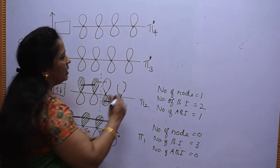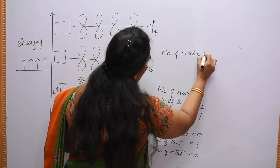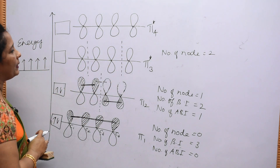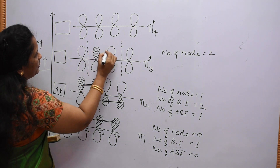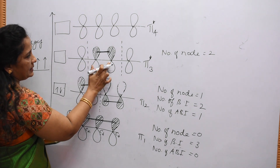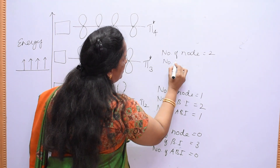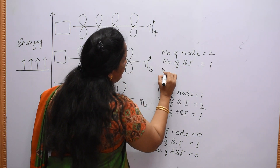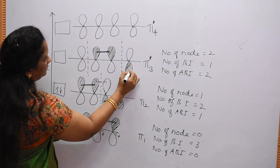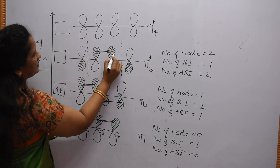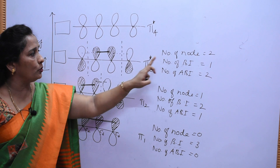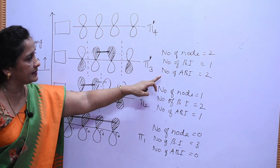Coming to the pi star 3 molecular orbital, the number of nodes is equal to 2. With two nodes, the bonding interaction can happen only between C2 and C3, so the number of bonding interactions is equal to 1. The number of anti-bonding interactions is equal to 2. So in pi star 3: 2 nodes, 1 bonding interaction, and 2 anti-bonding interactions.